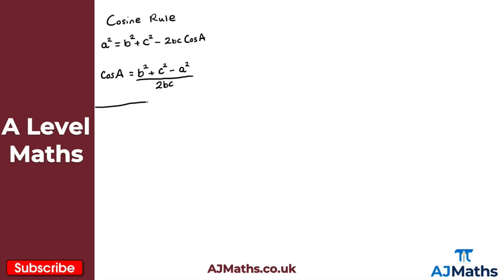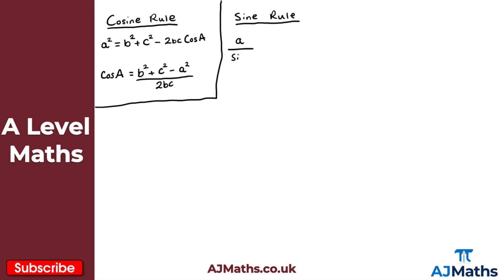So that's the cosine rule. The next one is the sine rule. There are two ways of expressing this formula depending on whether we're looking for a missing side or a missing angle. For a missing side, the formula is: a/sin(A) = b/sin(B) = c/sin(C).